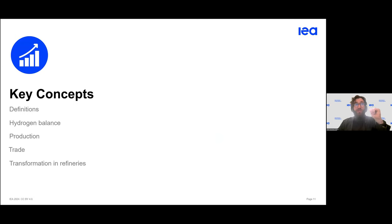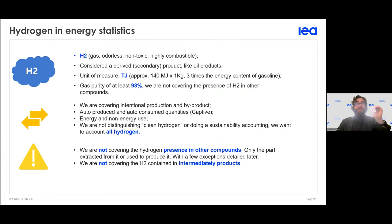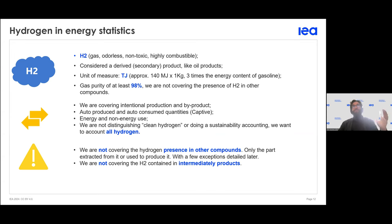Now let's look at some key concepts. First, what is hydrogen? Hydrogen is a gas — it is odorless, non-toxic, and has a very high combustion point, making it highly flammable. A large part of it comes from the combustion of natural gas. Its quantity is measured in terajoules (TJ), which is the preferred unit.